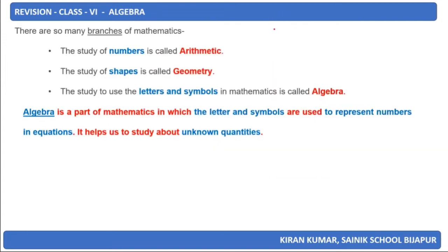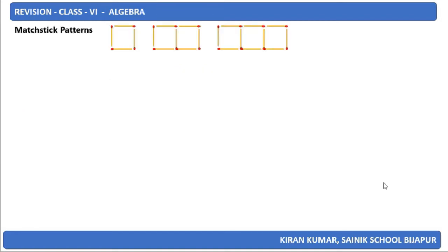There are many branches in mathematics. The study of numbers is called arithmetic. The study of shapes is called geometry. The study of use of letters and symbols in mathematics is called algebra. Algebra is part of mathematics in which letters and symbols are used to represent numbers in equations. It helps us study unknown quantities.